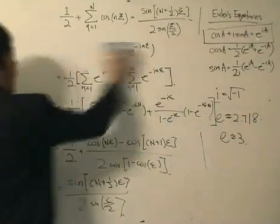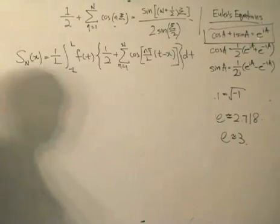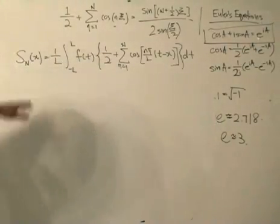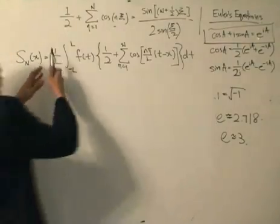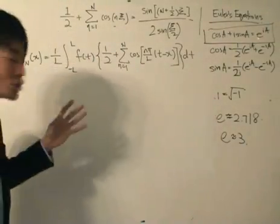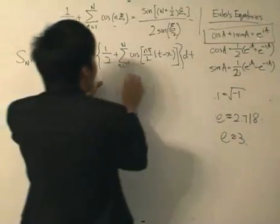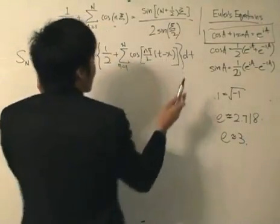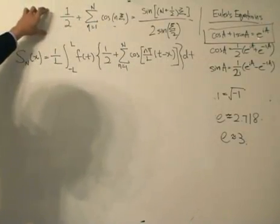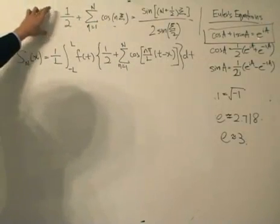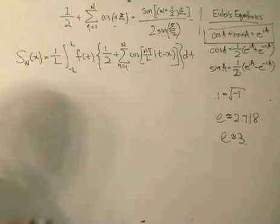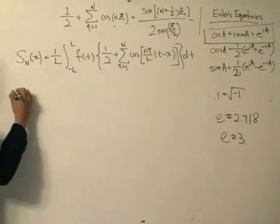Now I've rewritten the expression of the N-th partial sum, which we derived in the previous lesson. Recalling the two independent variables T and X, where we integrate with respect to T. What I'm going to do is use the identity we have proven — this powerful identity — so that we can remove the summation sign, taking one step further from the identity.